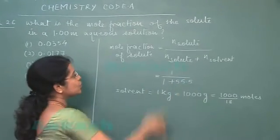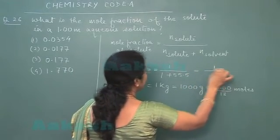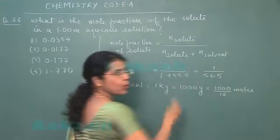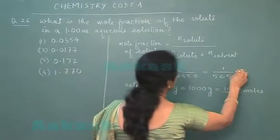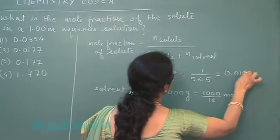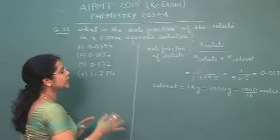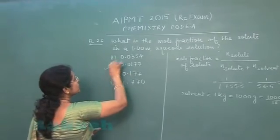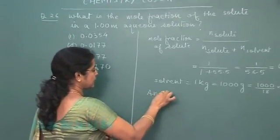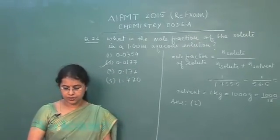So the mole fraction of solute equals 1 / (1 + 55.5) = 1 / 56.5, and solving this gives 0.0177. The correct answer is the second option.